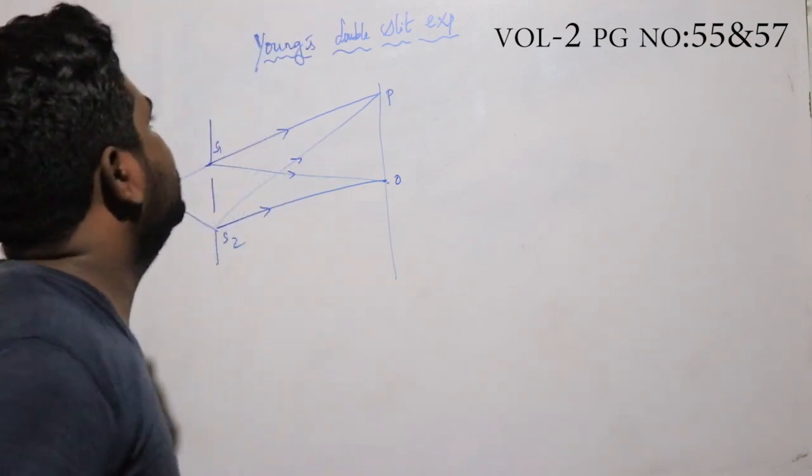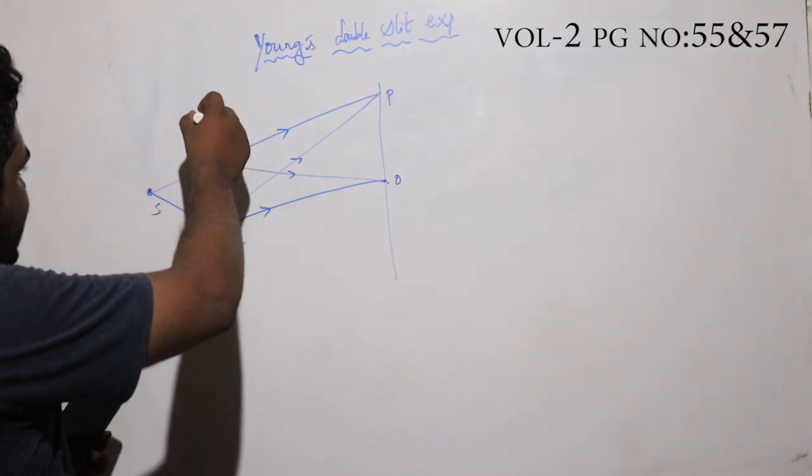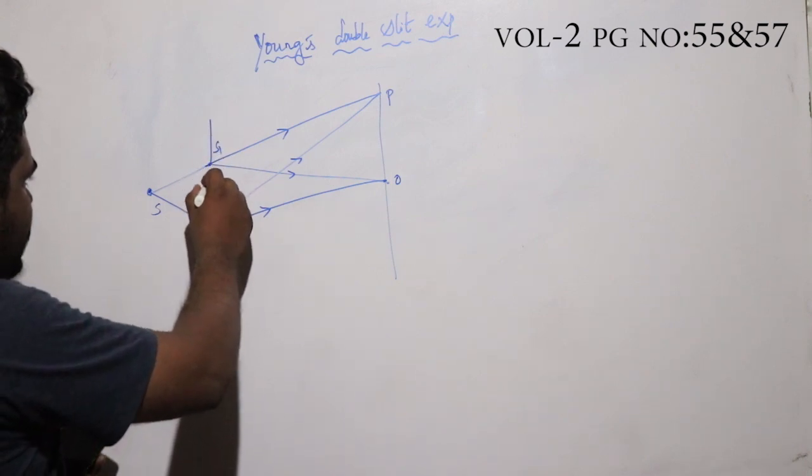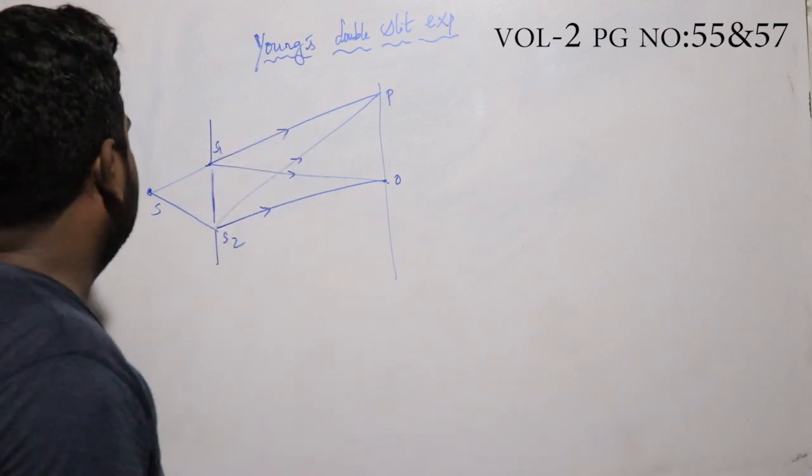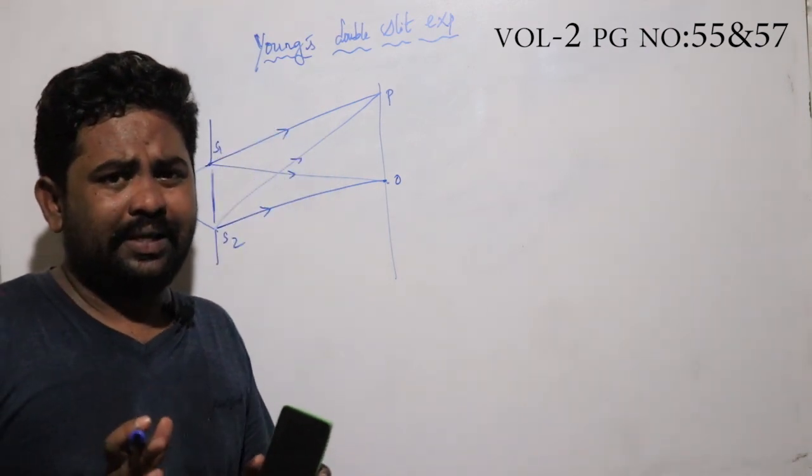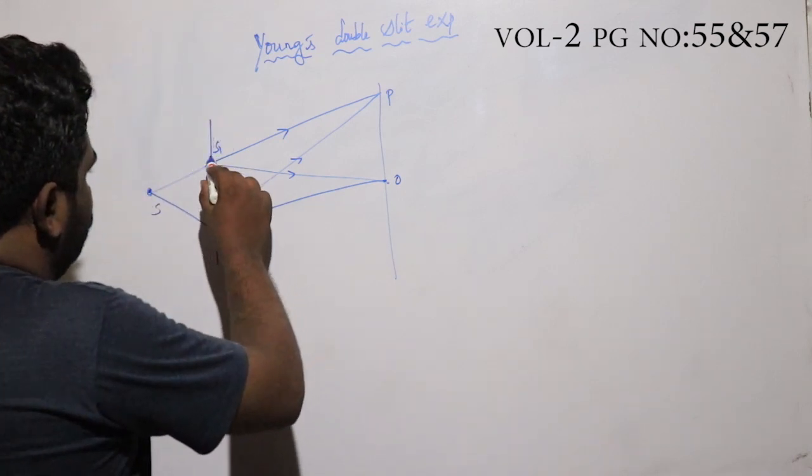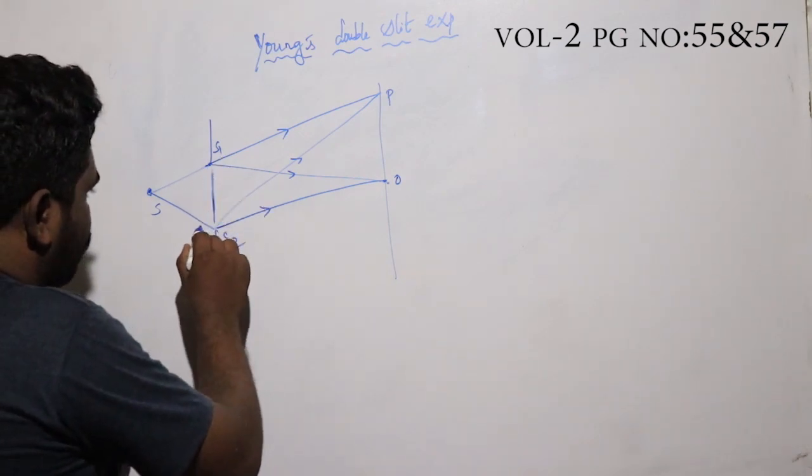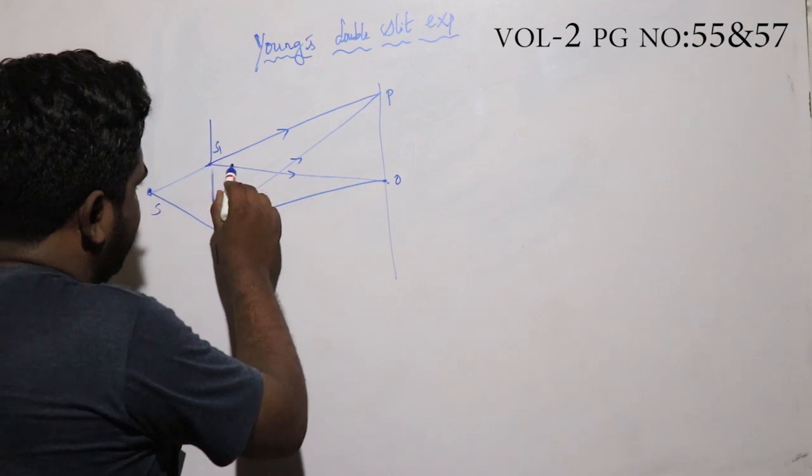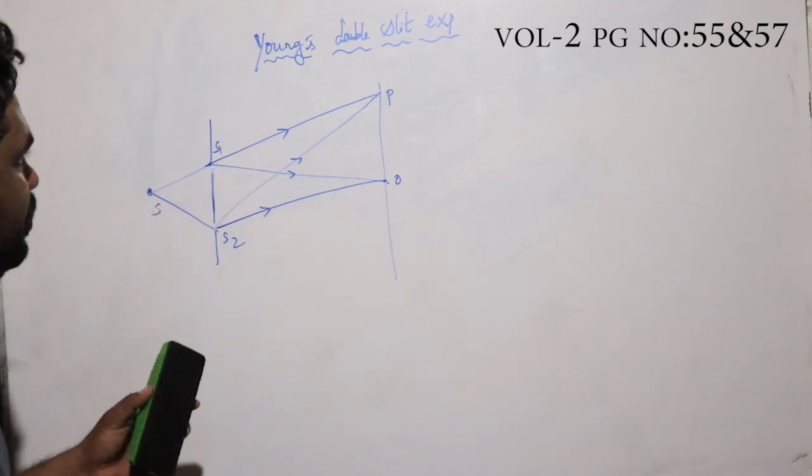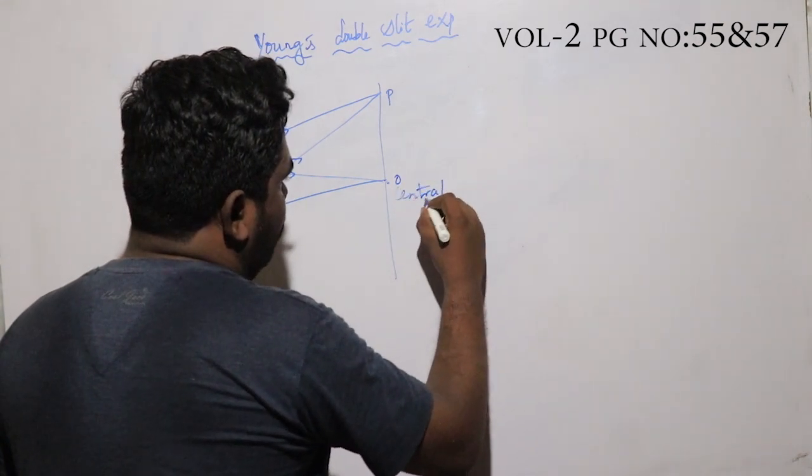In Young's double slit experiment, first we have a source that is the light producer and wave producer. On the source we have a narrow slit - we use a slit to get the narrow beam. Then we use two slits, two small openings, so the light passes through one way and the other way.